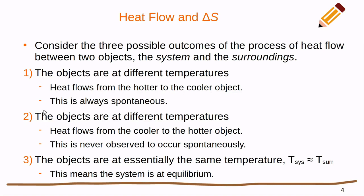The second scenario is the objects are at different temperatures and heat flows from the cooler to the hotter object, which is a strange thing to say. This never occurs spontaneously — we never see a hot metal rod next to a cold metal rod where the cold one gets colder and the hot one gets hotter. In the third scenario, the objects are essentially the same temperature, meaning the system is at equilibrium. We might still see energy transfer between them, but the net change will be zero.